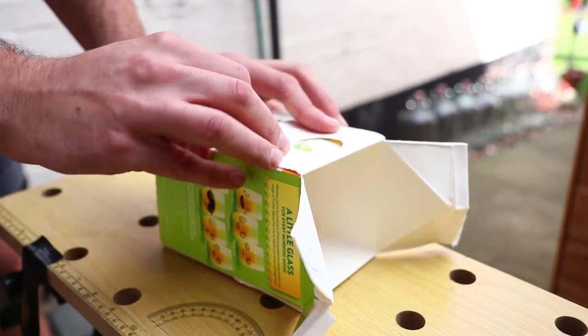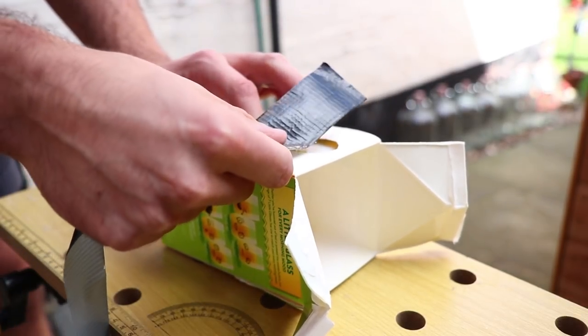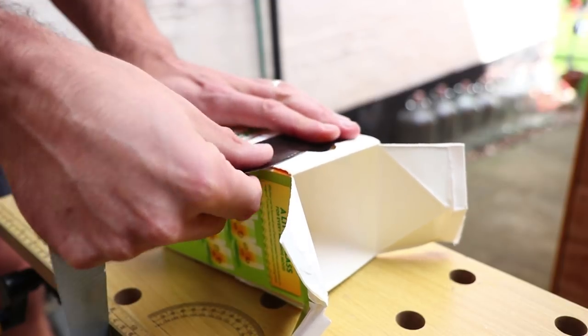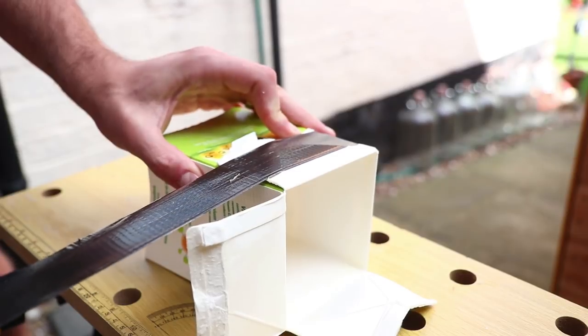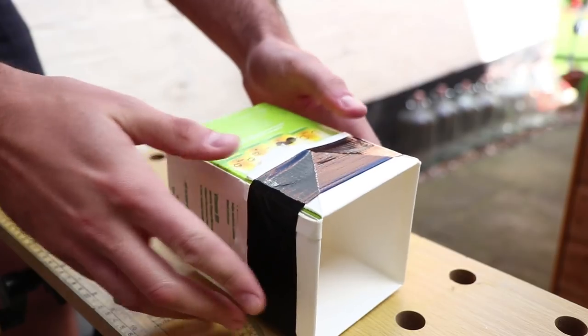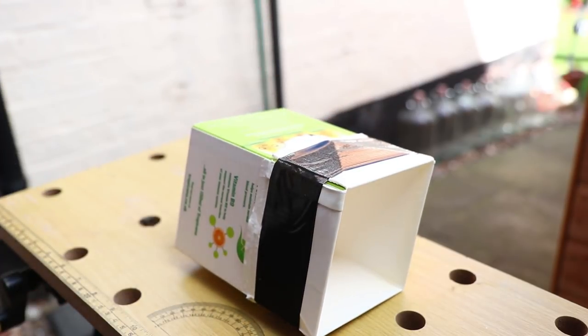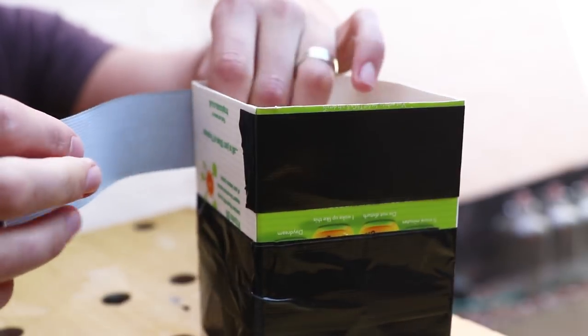For each of these flaps, take some gaffer tape or other strong tape and stick the four flaps down all the way round which will help the carton keep its shape. Also do another couple of strips around the middle and the bottom of the carton which will again help keep the shape of the carton when it's filled with cement.